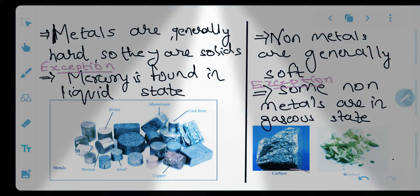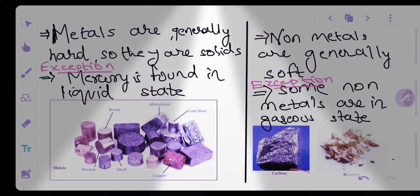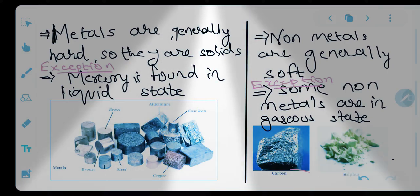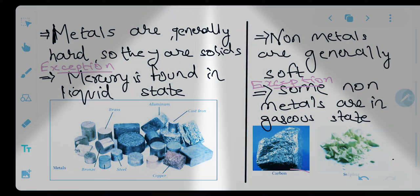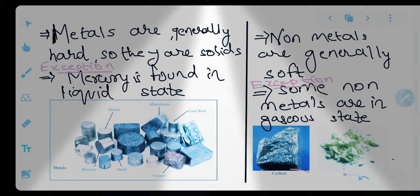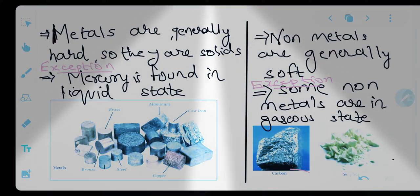If we compare with non-metals, non-metals are generally soft. They can also be found in free state, meaning they can exist in gaseous state as well. Because they are soft, you can easily break them by applying force. Examples of non-metals include carbon and sulfur.